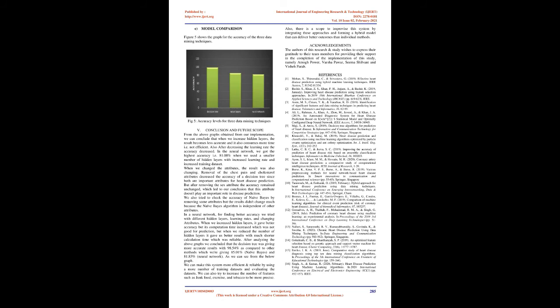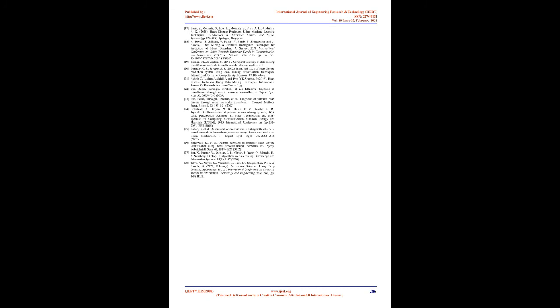Conclusion and Future Scope. From the above graphs obtained from our implementation, we can conclude that when we increase hidden layers, the result becomes less accurate and also consumes more time — i.e., not efficient. After decreasing the learning rate, the accuracy also decreased. In the neural network, we got the highest accuracy of 81.08% when we used a smaller number of hidden layers with increased learning rate and increased training dataset. When we changed the attributes, the results also changed. Removal of the chest pain and cholesterol attributes decreased the accuracy of the Decision Tree, since both are important attributes for heart disease prediction. After removing the sex attribute the accuracy remained unchanged, which led to the conclusion that this attribute does not play an important role in disease prediction. We also checked the accuracy of Naive Bayes by removing some attributes, but the results did not change much because the Naive Bayes algorithm is independent of other attributes.